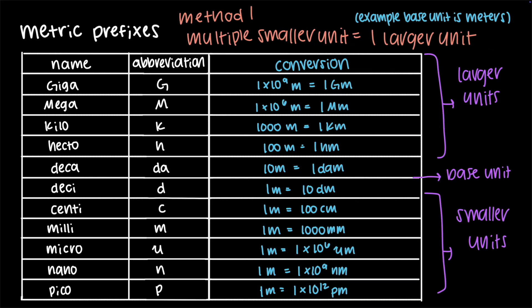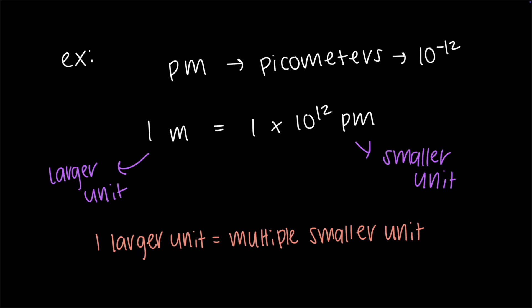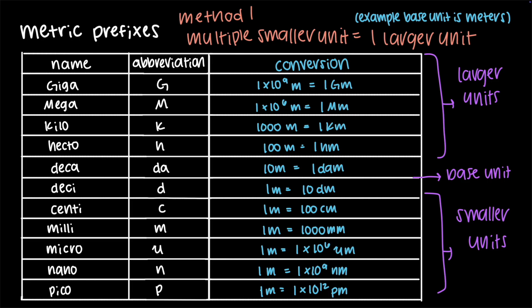In the first method, we identify a larger unit and a smaller unit and use the idea that one of the larger unit equals a multiple of the smaller unit. The units are arranged on a metric scale with larger units at the top, smaller units at the bottom, and the base unit in the middle. Once we know the prefix and its position on the scale, we write the conversion so that 1 larger unit equals 10 raised to a certain power of the smaller unit. That power of 10 will always be greater than 1, even if the exponent is negative, because we will always have more of the smaller unit to equal the larger unit. It's often easier to convert through the base unit, since that's the reference point where all prefix-based equivalents are defined.